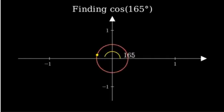Finding cosine of 165 degrees using addition properties. To solve this, we'll first visualize 165 degrees on the unit circle. Here's our unit circle with our angle of 165 degrees marked.